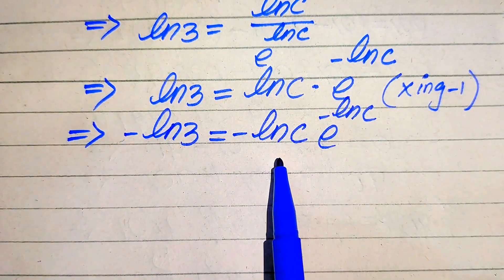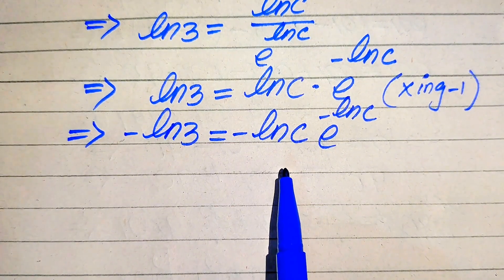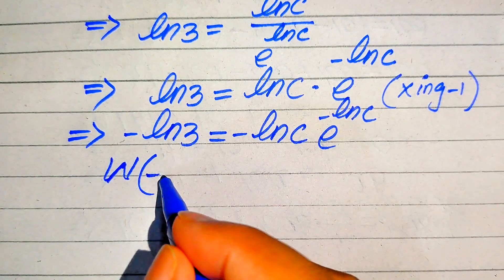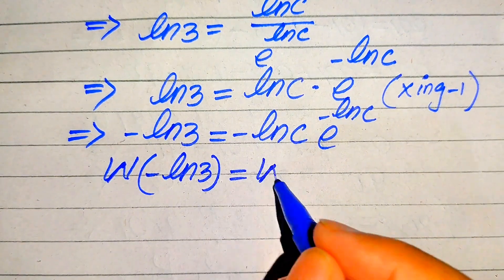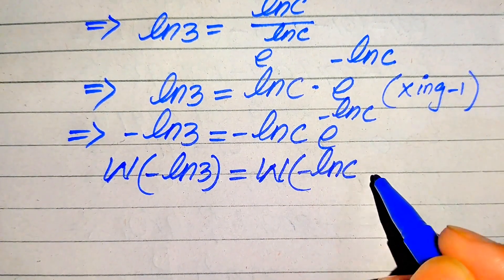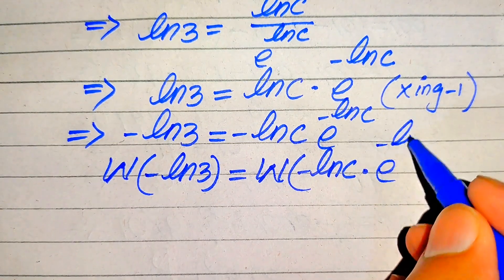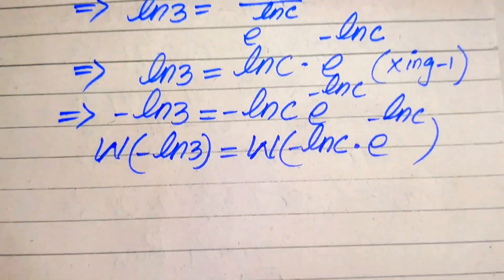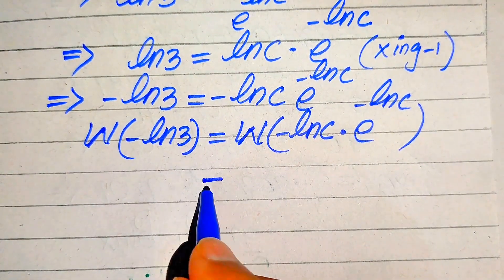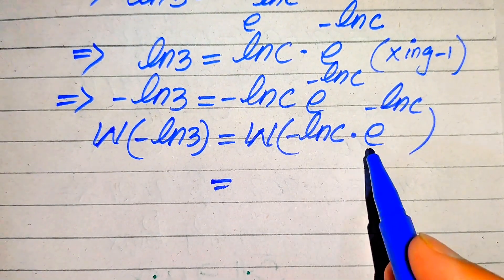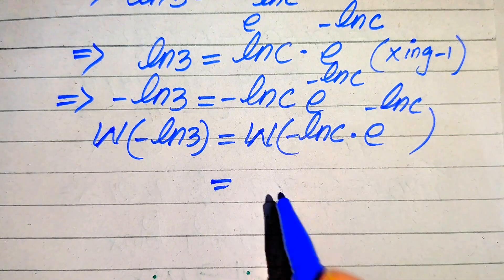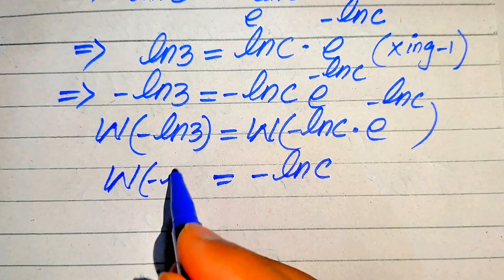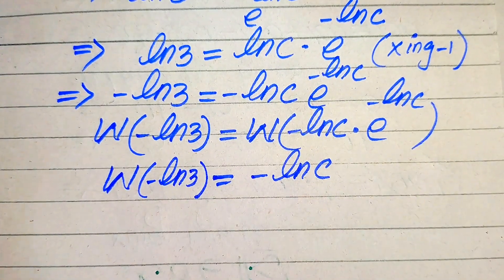Now we can see that the exponent of e is multiplied by the same term, so we are ready to apply the Lambert W function on both sides. Applying it, we get: W of (minus log 3) equals W of (minus log c times e to the power of minus log c). According to the definition of the Lambert W function, the output equals the exponent of e only, which is minus log c. So we have: W of (minus log 3) equals minus log c.